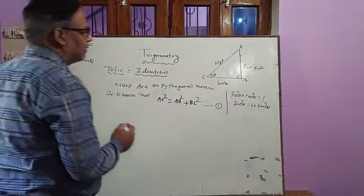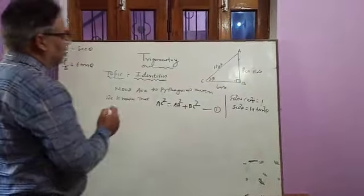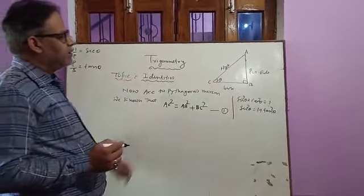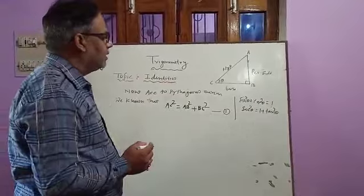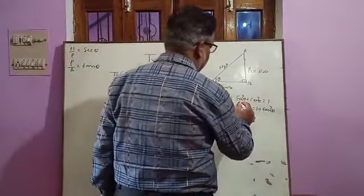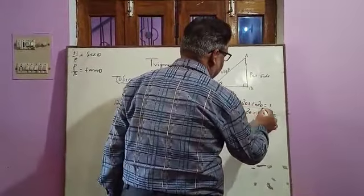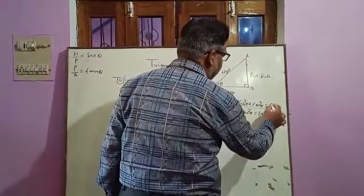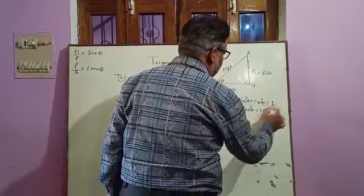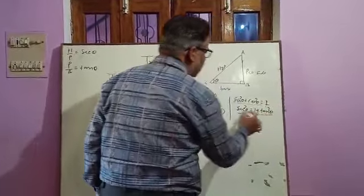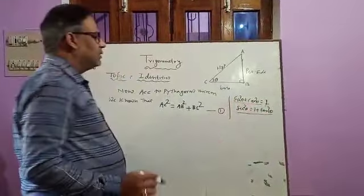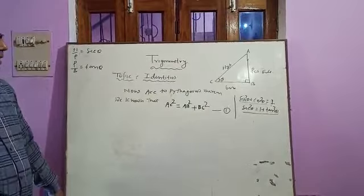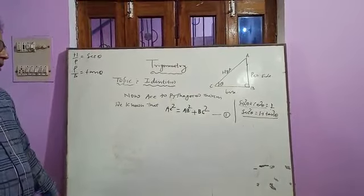I have already explained the two identities of trigonometry: the first one is sin²θ + cos²θ = 1, and the second one is 1 + tan²θ.